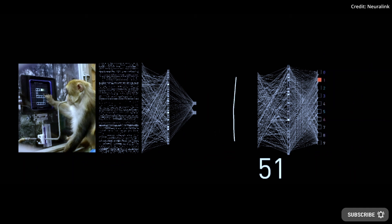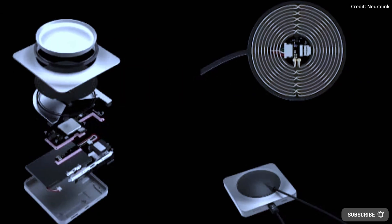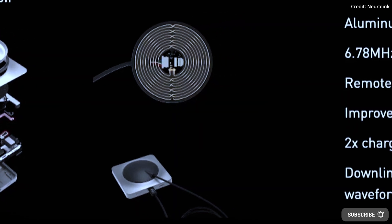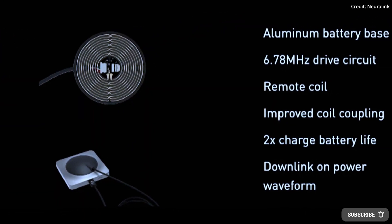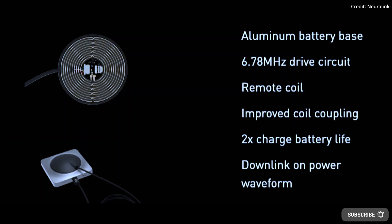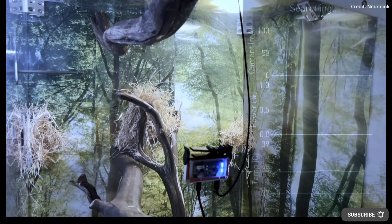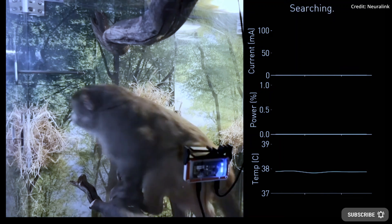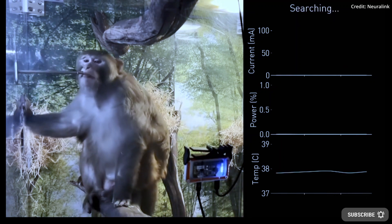Because Neuralink's N1 implant is wireless, they've improved the battery of the device with a new charger that employs an aluminum battery base with a 6.78 MHz drive circuit to achieve double the battery life compared to before, which is also charged wirelessly, and they are already developing their next-generation charger using bi-directional near-field communication.